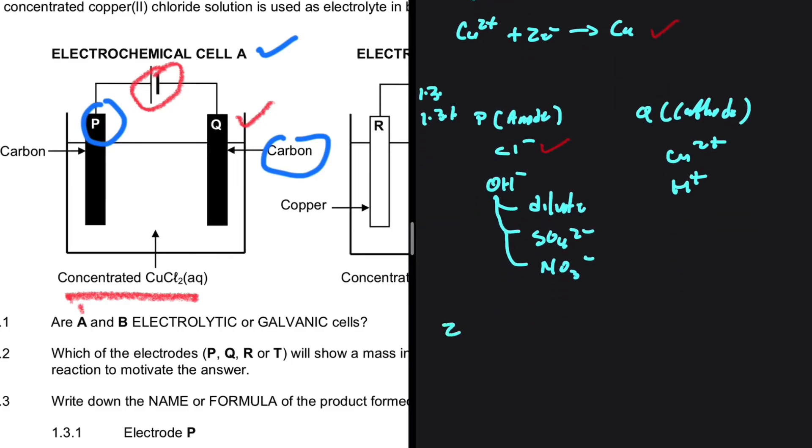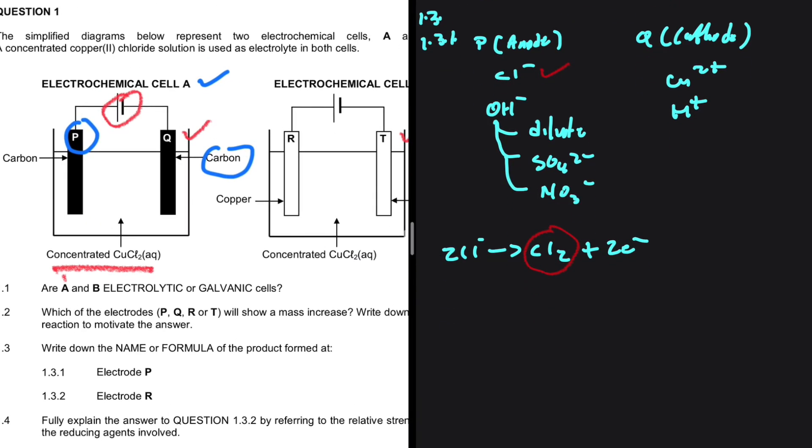So at the anode, we have 2 Cl minus getting oxidized to form Cl2 plus 2 electrons. The product that is formed at electrode P is chlorine gas or Cl2 if you decide to write the formula.